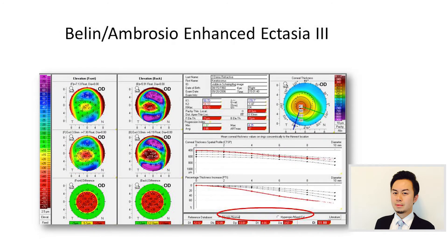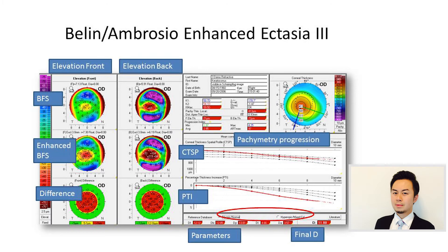This display summarizes the BAD. The left column shows the elevation profile of the anterior cornea, and the column next to it shows the elevation profile of the posterior cornea. The two red lines show the pachymetric progression index or profile, and at the very bottom are five parameters and the final D-values.